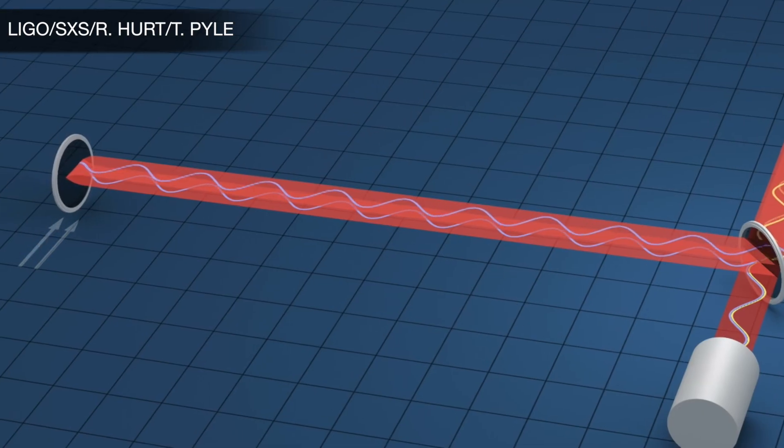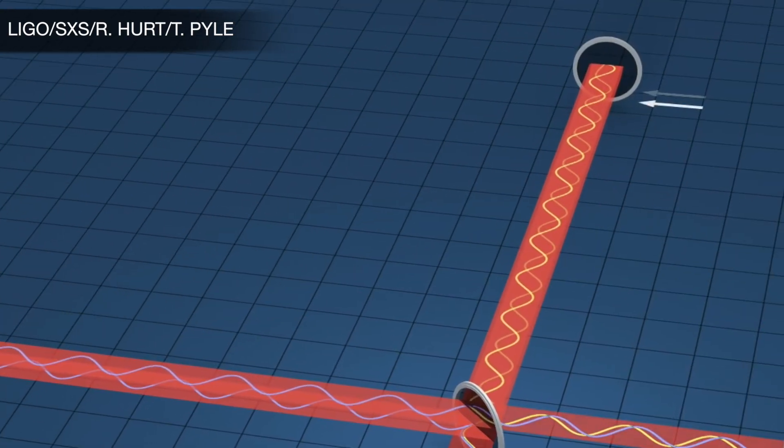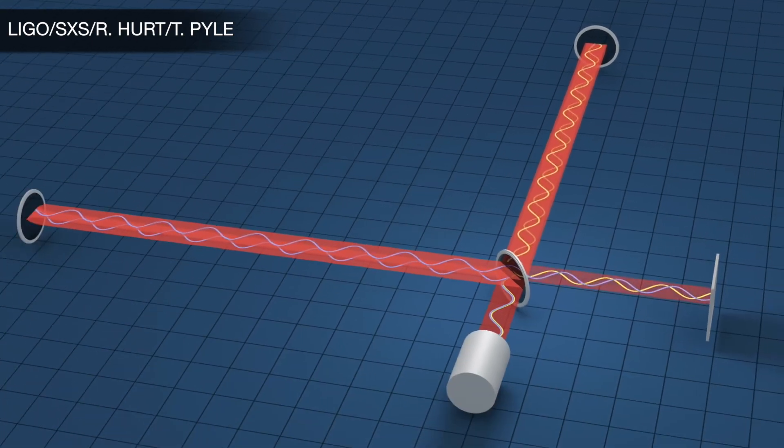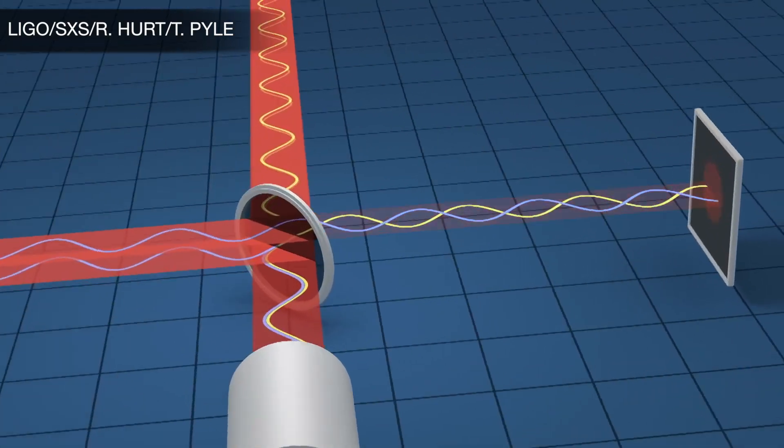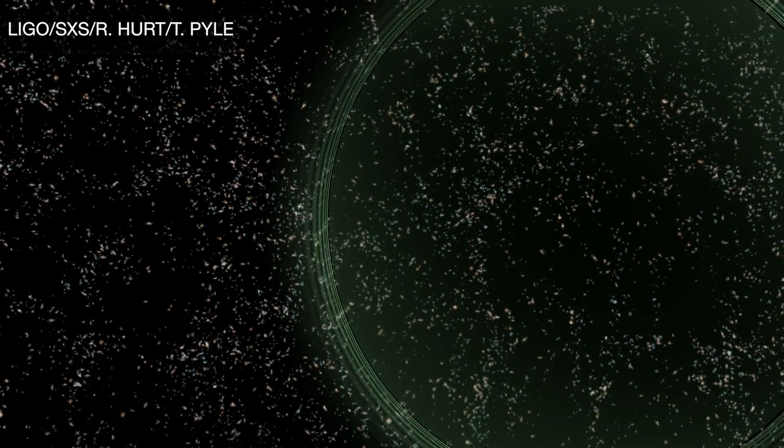If space is stretched or squeezed in one of these directions by passing gravitational waves, the laser beams in that arm will travel for more or less time affecting how the two beams interfere when they meet back up. And we can tell space has been stretched.